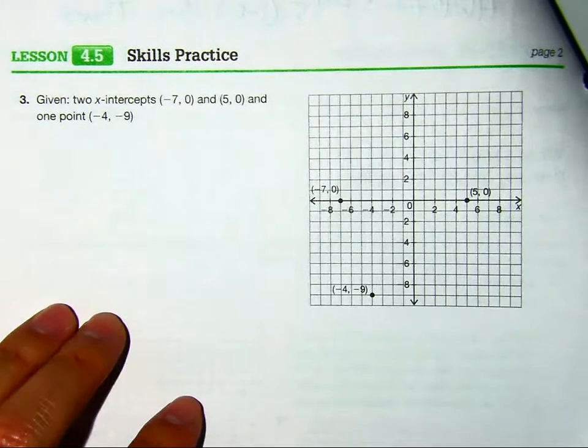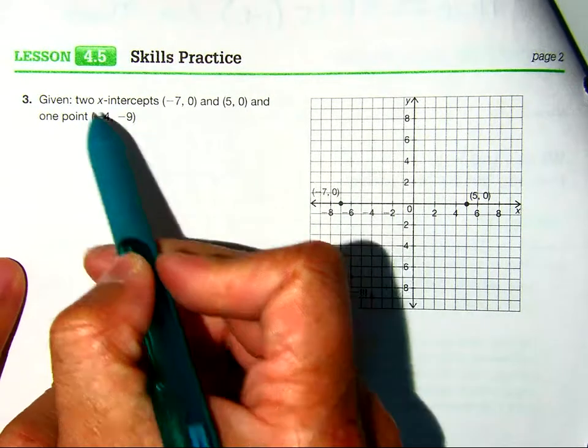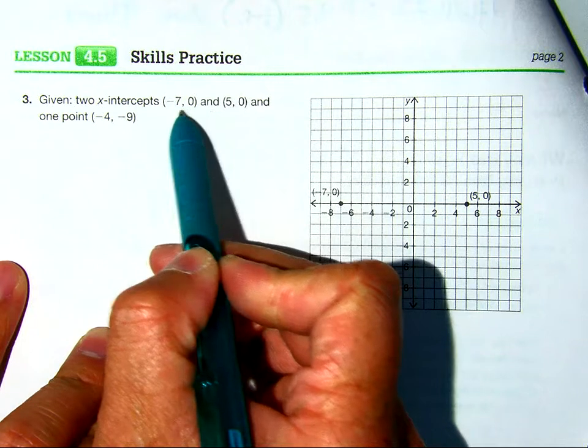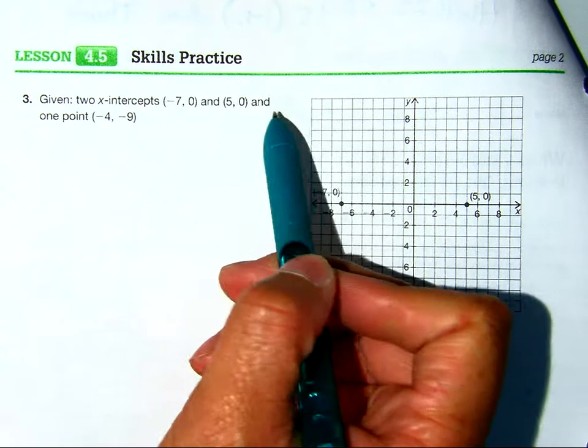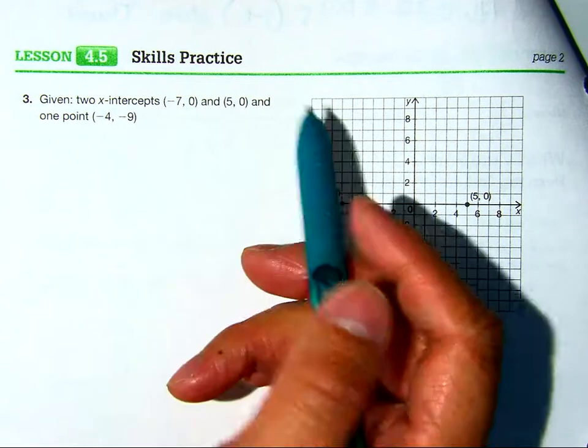Alright, so we need to write an equation for number 3, but this time they give us 2 x-intercepts, (-7, 0) and (5, 0), and one point (-4, -9).